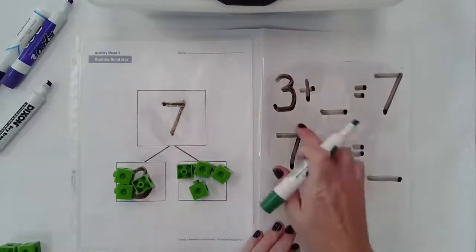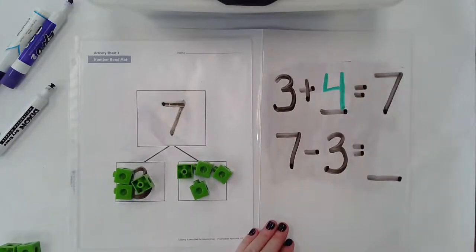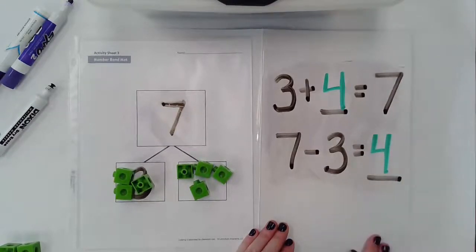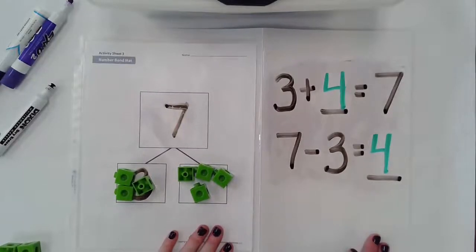So I know that three and four together give me seven. Then I also know that seven minus three gives me four. So these are different ways that you can use to find those missing addends.